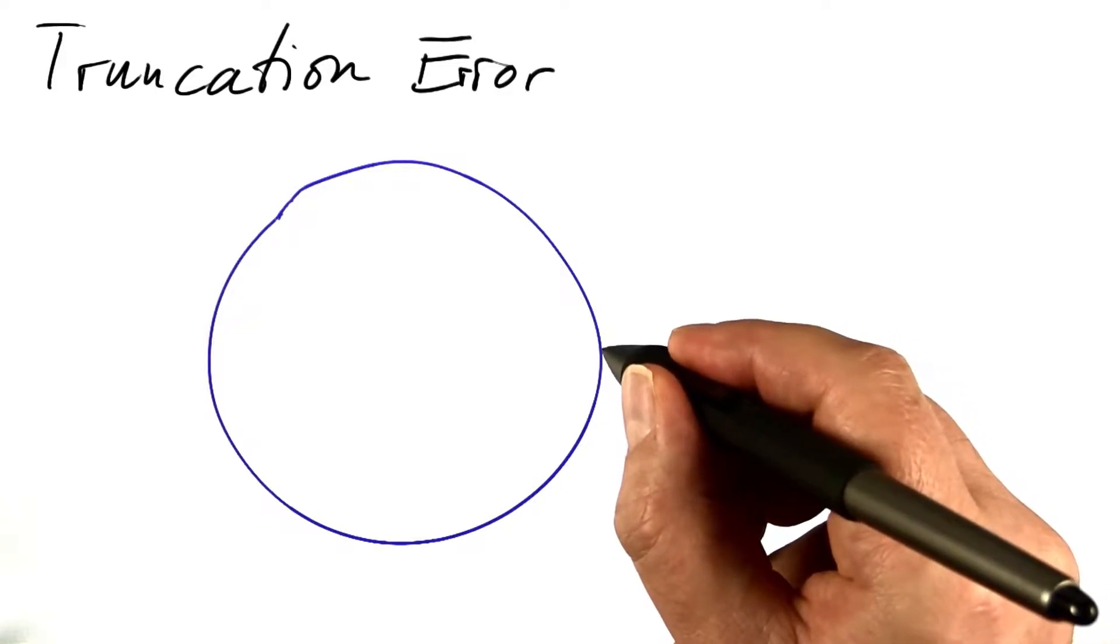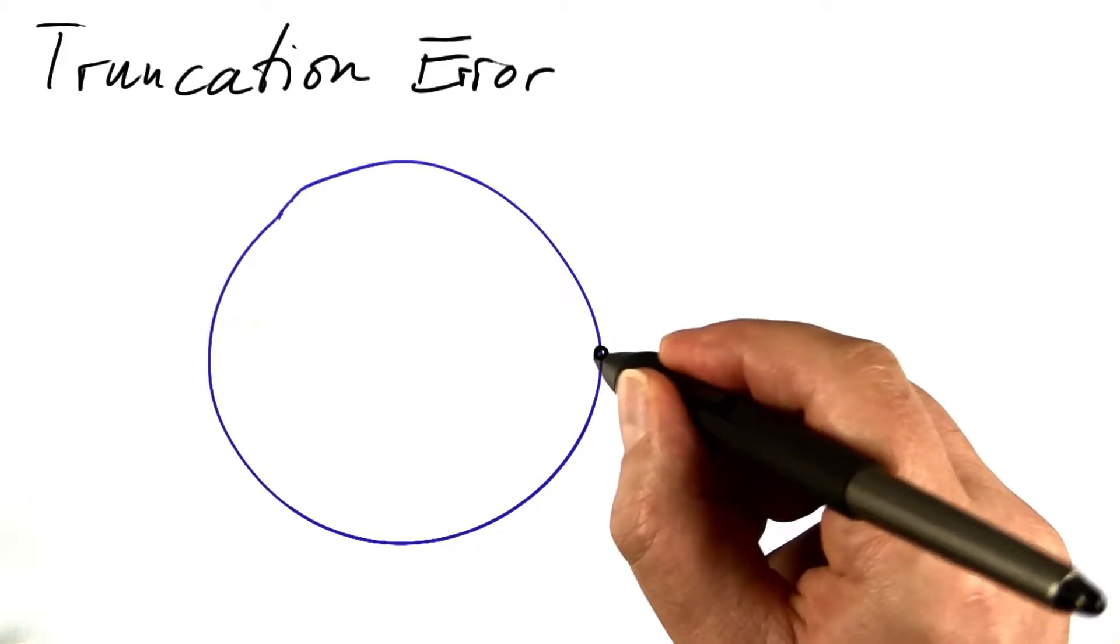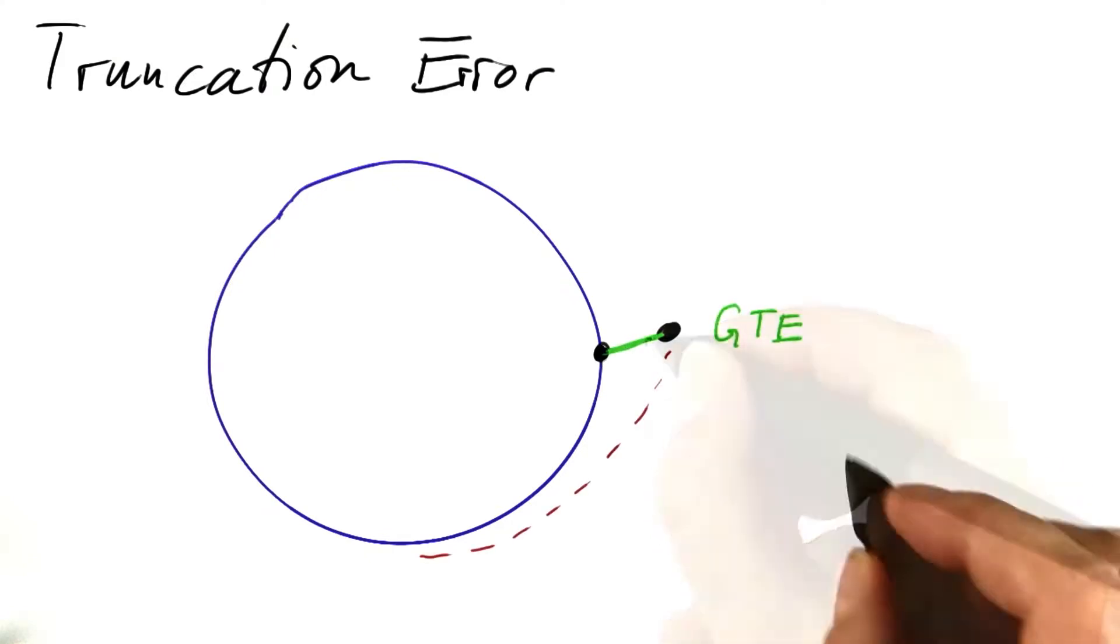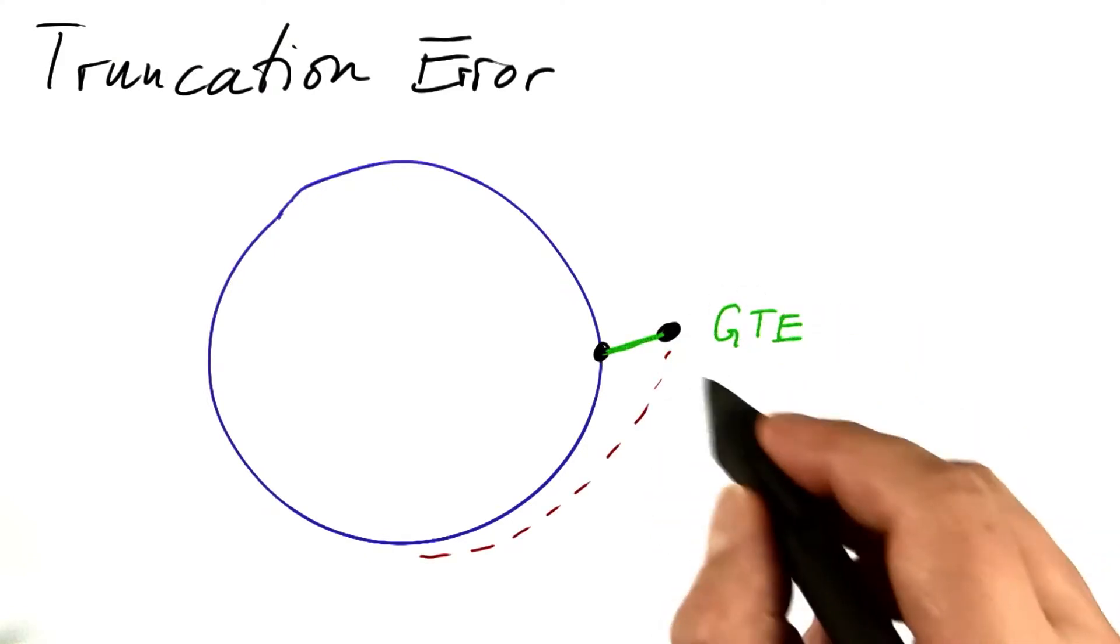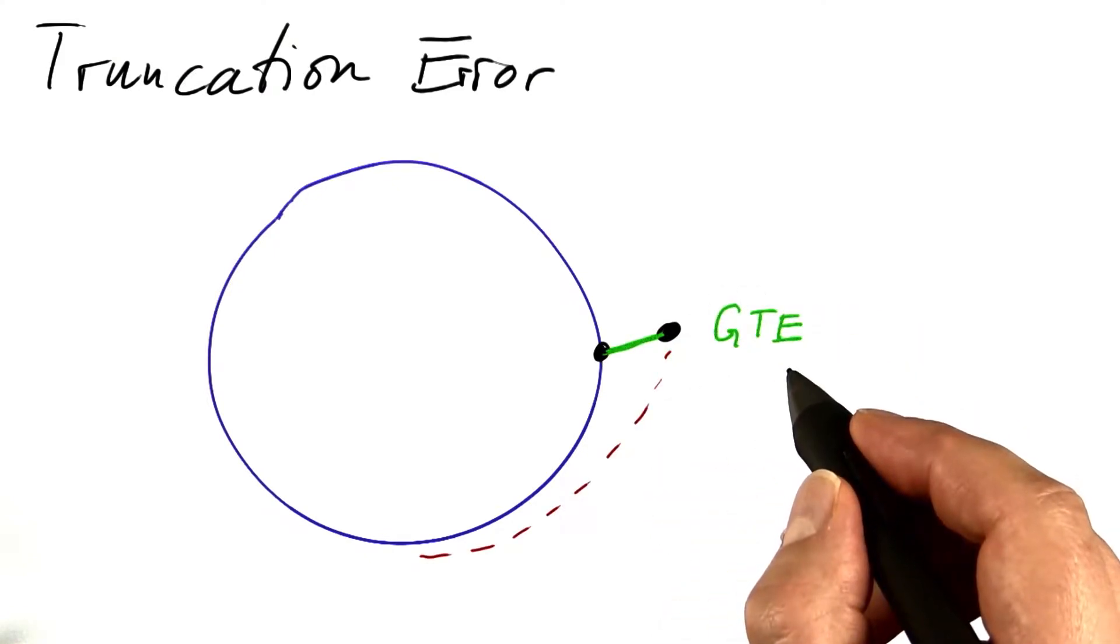The error that we just saw happening in the quiz is called the global truncation error, or GTE. This error stems from using a finite step size.